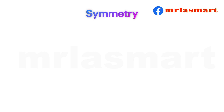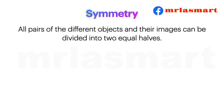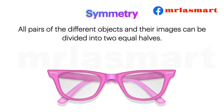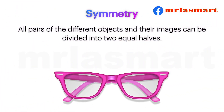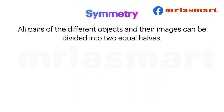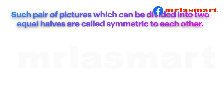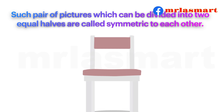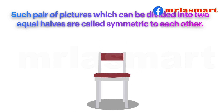Symmetry. All pairs of the different objects and their images can be divided into two equal halves. Such pairs of pictures which can be divided into two equal halves are called symmetric to each other.